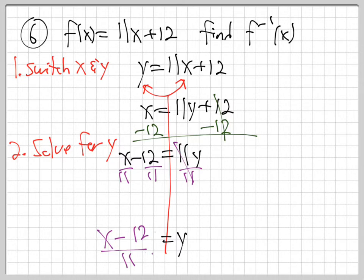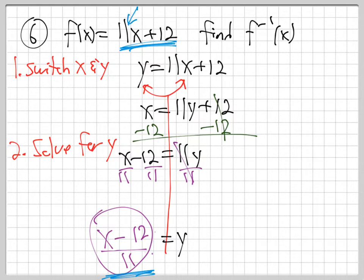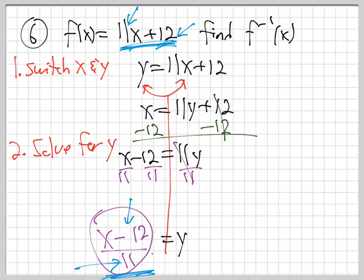That's the inverse function. Notice that the original function multiplied by 11 and then added 12. The inverse does the opposite: subtract 12 and divide by 11. That's the inverse — doing the opposite, turning toast back into bread. Step one: switch x and y. Step two: solve for y. We'll do a bunch more — they'll get messier but it's the same process.